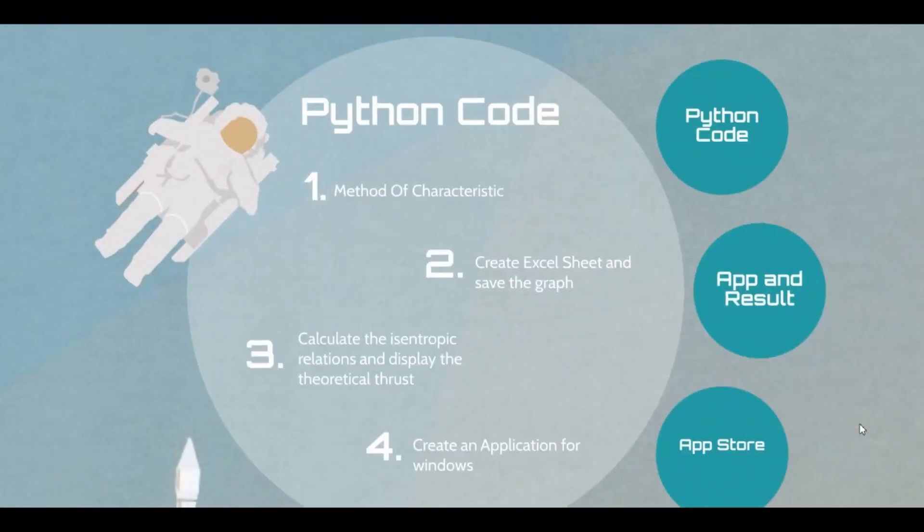Our Python code mainly uses methods of characteristic equations. After the Python code is compiled, an Excel sheet will be saved in your system with a graph of the nozzle. That Excel sheet can be used to generate a CAD part. We even used isentropic relations to calculate the theoretical thrust and other properties of the flow. We converted this Python code into an application which is available online.